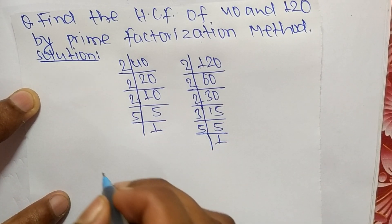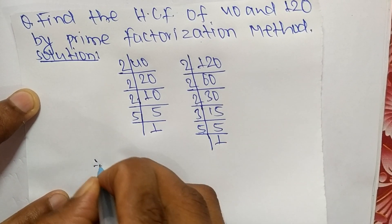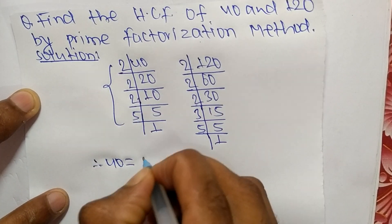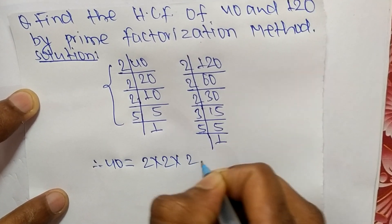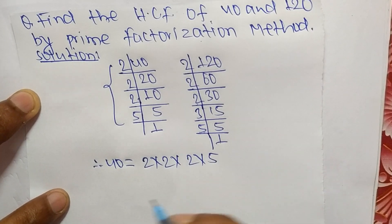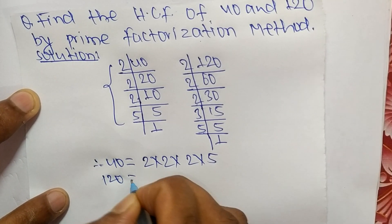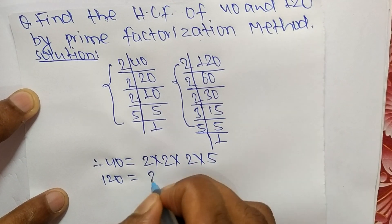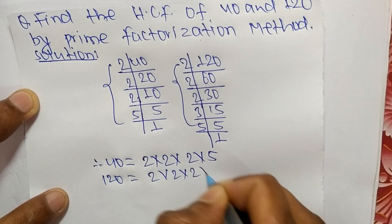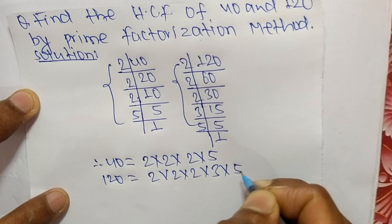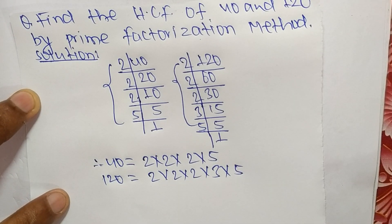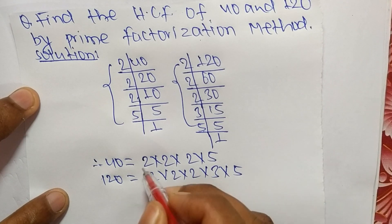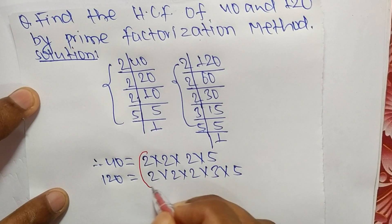From these prime factors we can write: 40 is equal to 2 times 2 times 2 times 5, and 120 is equal to 2 times 2 times 2 times 3 times 5. Now we select the common factors from these prime factorizations.